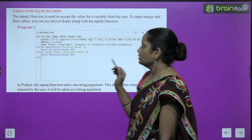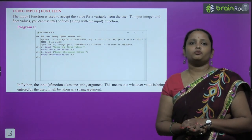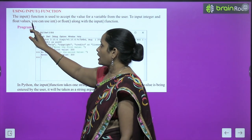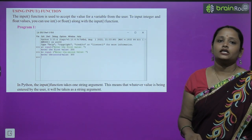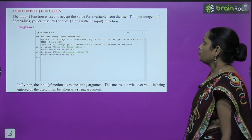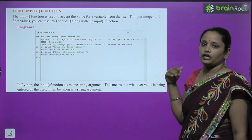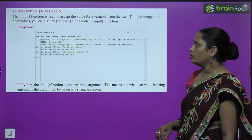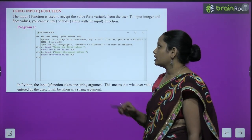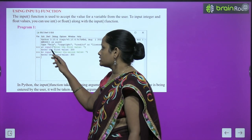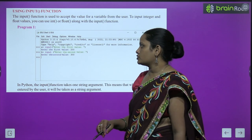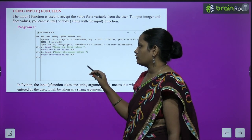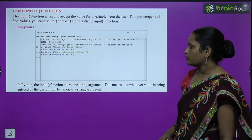Next is using the input function. The input function is used to accept values for a variable from the user. To input integer and float values, you use int and float along with the input function. For example, a = input('Enter the first value:') — first value is 200. Then b = input('Enter the second value:') — second value is 300.